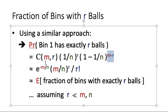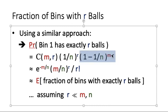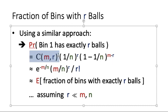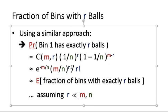For the remaining m minus r balls, they have to be in some other bins, so this happens with probability 1 minus 1 over n to the power m minus r. When n is very large, this value is close to e to the power minus m over n, since r is not comparable to m. The term m choose r can be approximated as m to the power r divided by r factorial, and combining with 1 over n to the power r, we get m over n to the power r divided by r factorial times e to the power minus m over n.